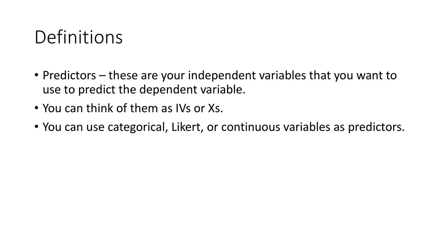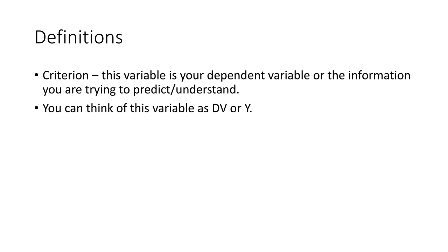We can use categorical, ordinal, or continuous variables as predictors. Our criterion variables are our dependent variables. The term criterion is more common in stats textbooks than in everyday conversation — most people still talk about IVs and DVs, or X and Y. But essentially we're trying to predict, so we use it as a criterion to measure how well our predictors work. You can think of this as the DV or Y. In this lecture they need to be continuous, or at least mildly continuous. For categorical DVs, go watch logistic regression.